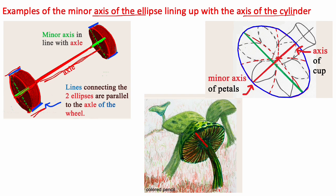For the mushroom the center of the stem lines up with the minor axis of the elliptical cap and for the daffodil the axis of the cup lines up with the minor axis of the petals which form an elliptical shape.